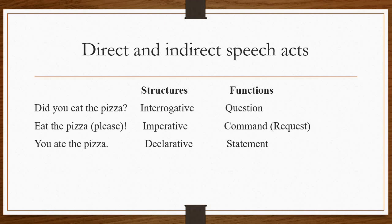There are two types of speech acts: direct and indirect. Consider 'Did you eat the pizza?' — the structure is interrogative, starting with 'did' and ending with a question mark, and its function is to ask a question. Now 'Eat the pizza please' has an imperative structure, and the function of imperatives is command or request.